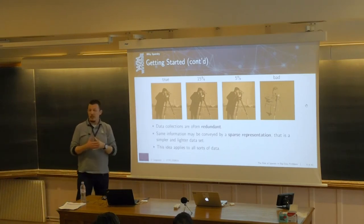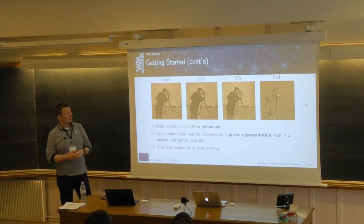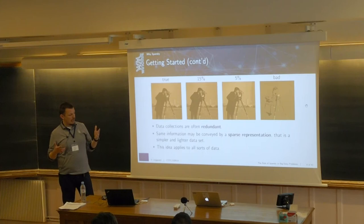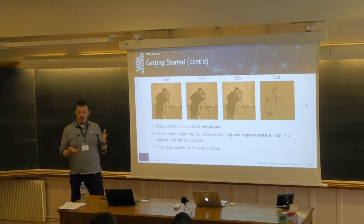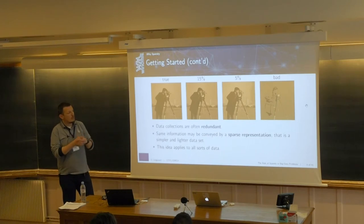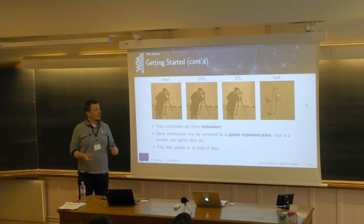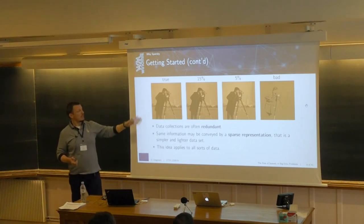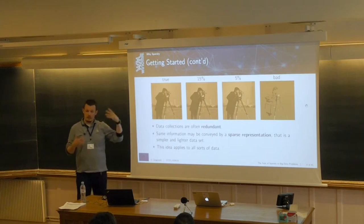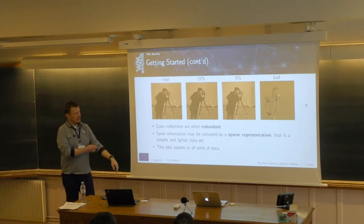The point of this example is that images, and most of our datasets, are usually over-determined — we have much more information than we really need for a given task. The idea is to find a sparse representation where most coefficients are zero and just a few non-zero ones are sufficient to represent our data. This works not only for images but for almost all kinds of datasets.